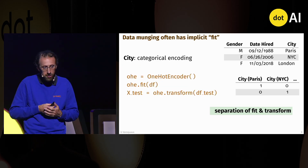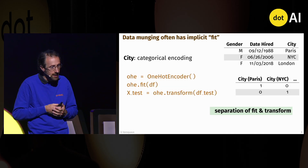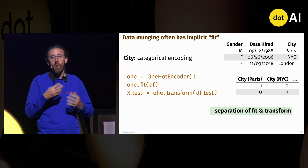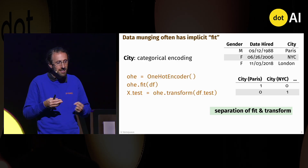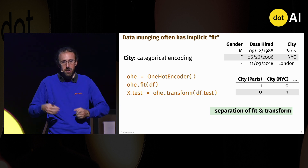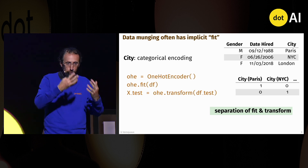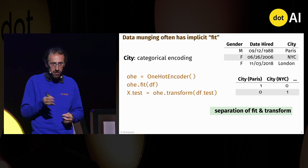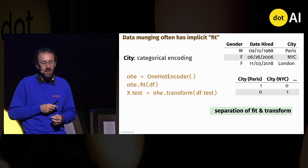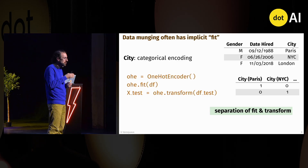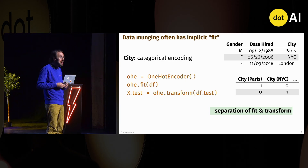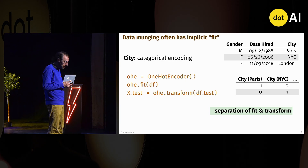In machine learning with scikit-learn, we have the OneHotEncoder object that handles this. It separates the fit — figuring out which categories are in the data — from the transform, which is transforming the data. This separation of fit and transform is also important in data preparation.